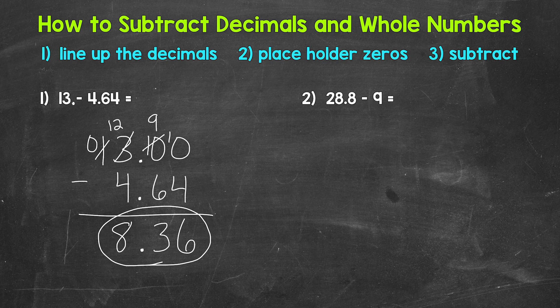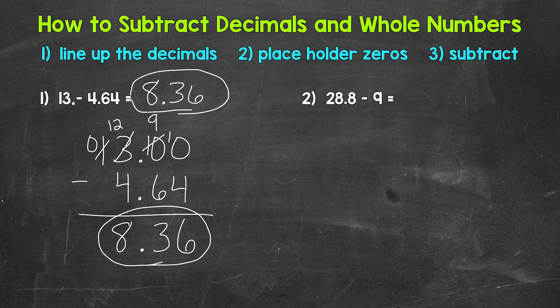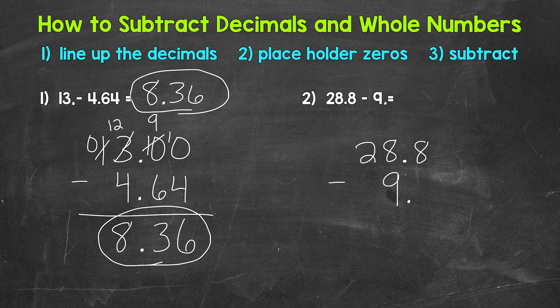8 and 36 hundredths. So 13 minus 4 and 64 hundredths equals 8 and 36 hundredths. Let's move on to number 2, where we have 28 and 8 tenths minus 9. Let's set this problem up by lining up the decimals. For our whole number 9, the decimal goes right here — so we have 28 and 8 tenths minus 9 with the decimal point.